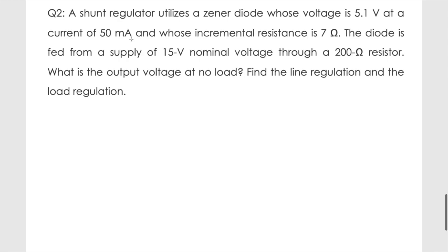The second problem: a shunt regulator utilizes a Zener diode whose voltage is 5.1 volts at a current of 50 milliampere, and whose incremental resistance rz is 7 ohms. The diode is fed from a 15-volt nominal supply through a 200-ohm resistance. We need to find the output voltage at no-load condition, and also the line regulation and load regulation.